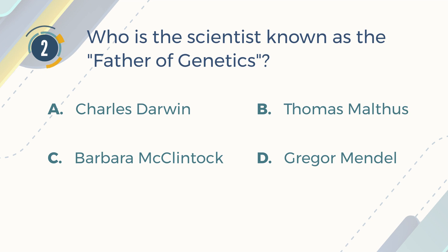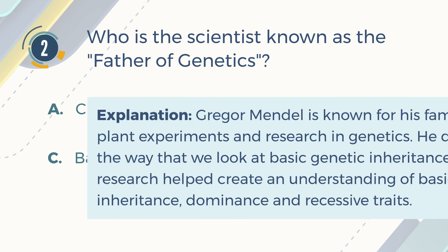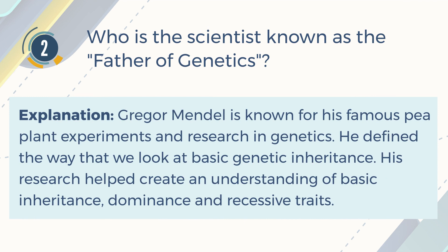The correct answer is D. Gregor Mendel. Explanation: Gregor Mendel is known for his famous pea plant experiments and research in genetics. He defined the way that we look at basic genetic inheritance. His research helped create an understanding of basic inheritance, dominance, and recessive traits.